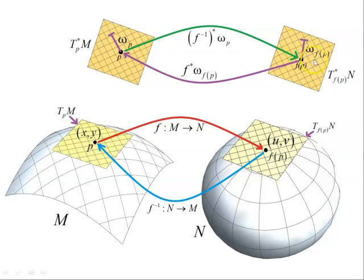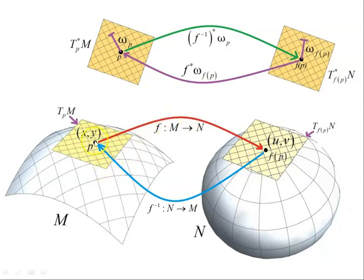So here's our form — du wedge dv — and we're going to pull that back to get dx wedge dy, plus the prefactor element. That was our map F from M to N; we're going to pull back against this map. This map maps points in the XY coordinate system to the UV coordinate system, and we're going to take a form in the cotangent space of N and pull it back to the cotangent space of M.